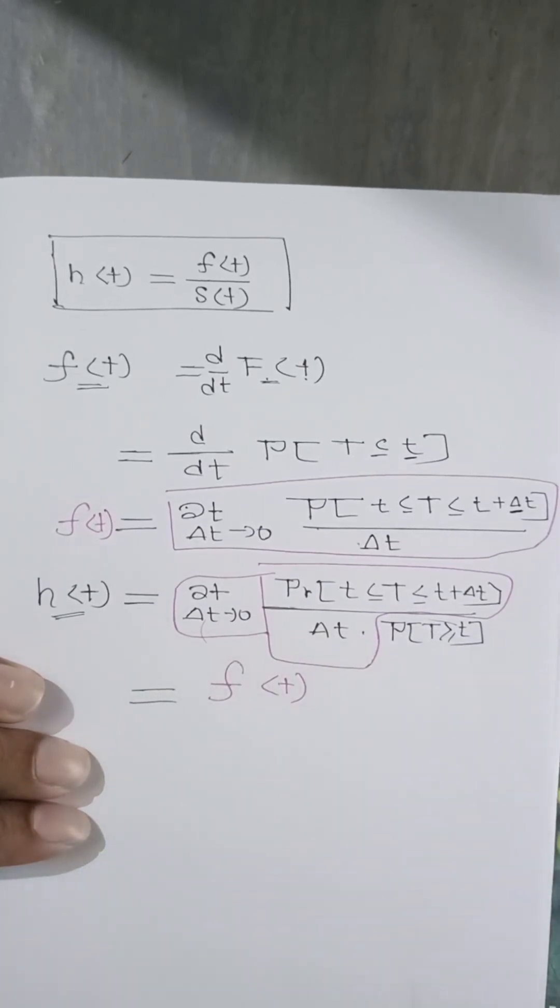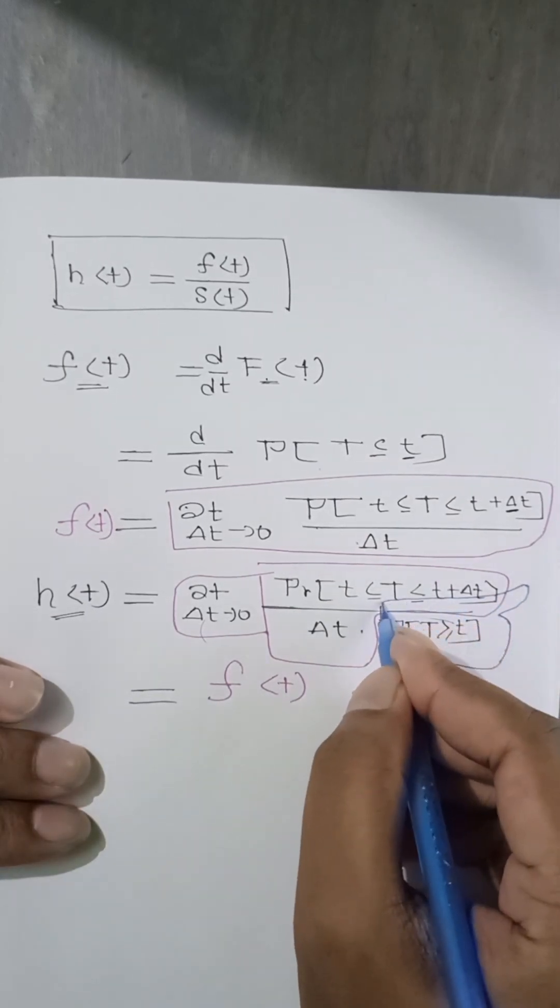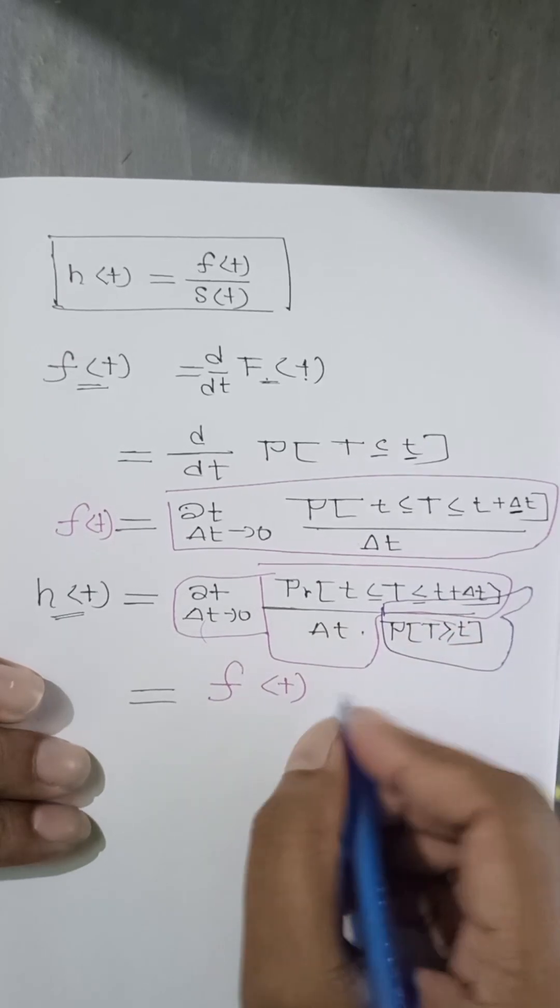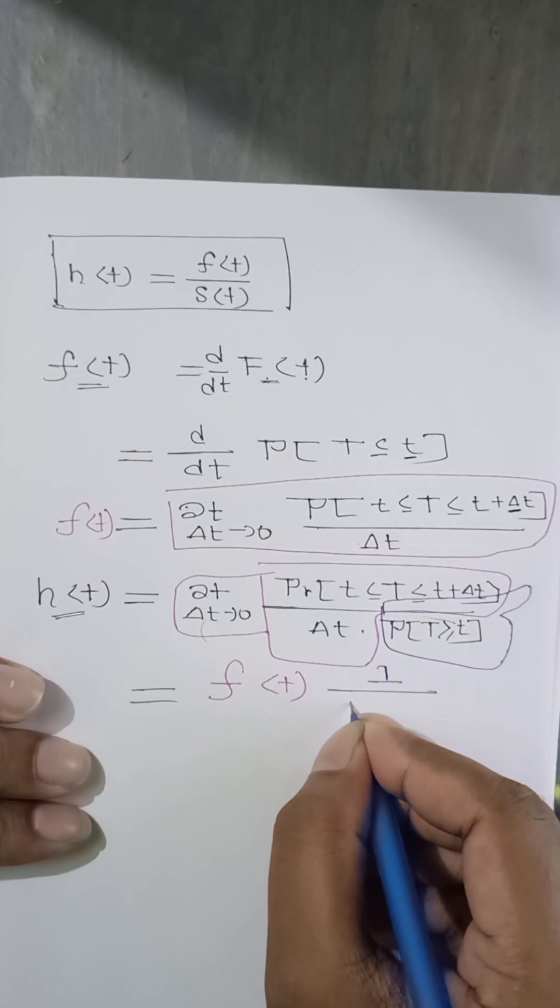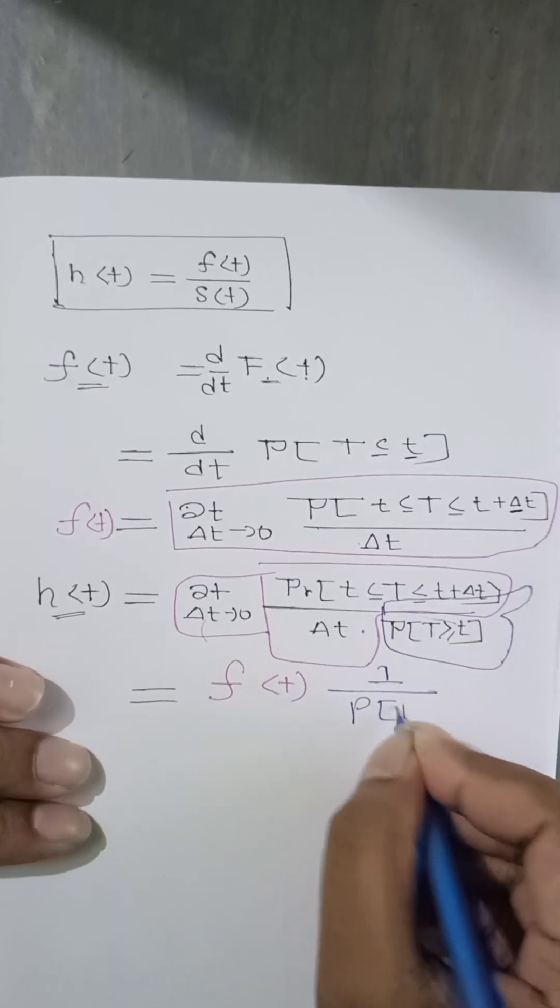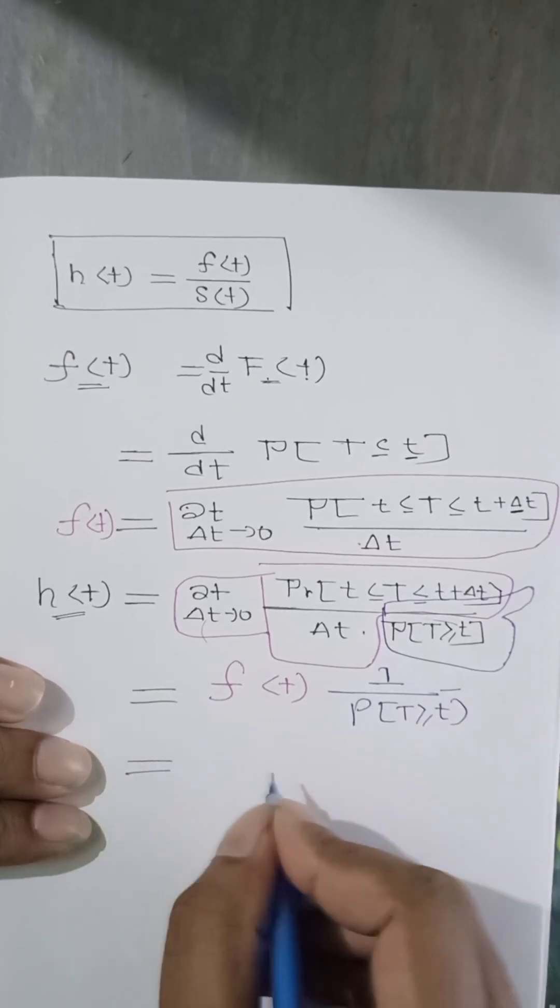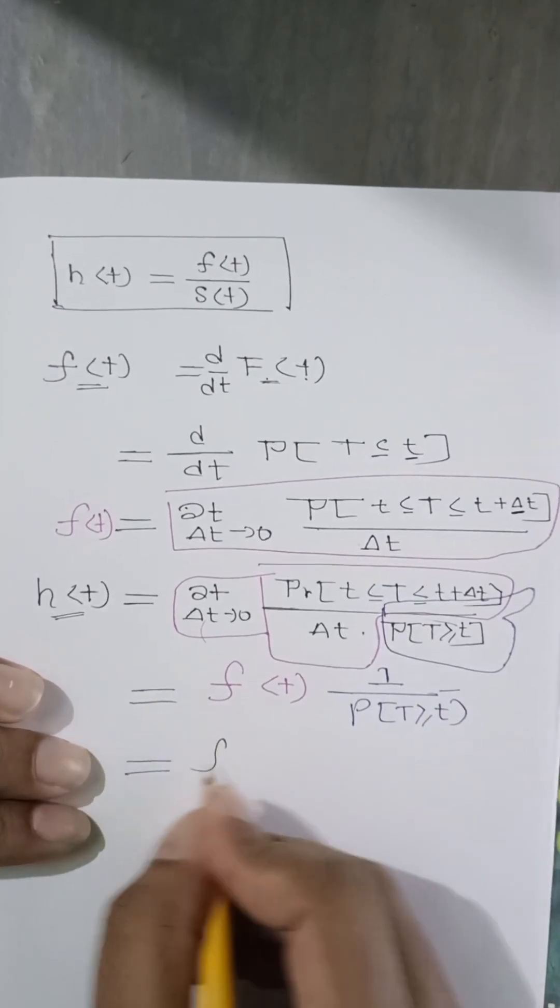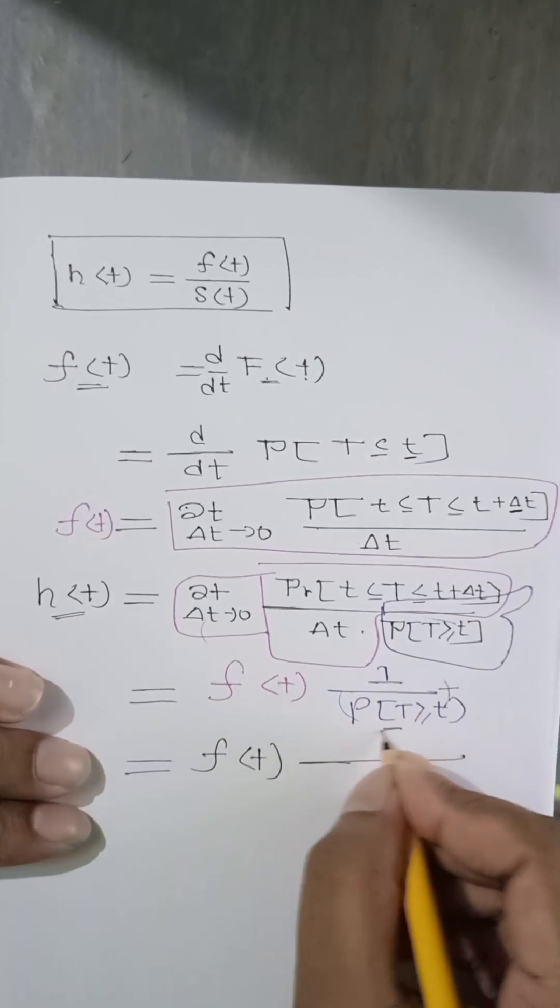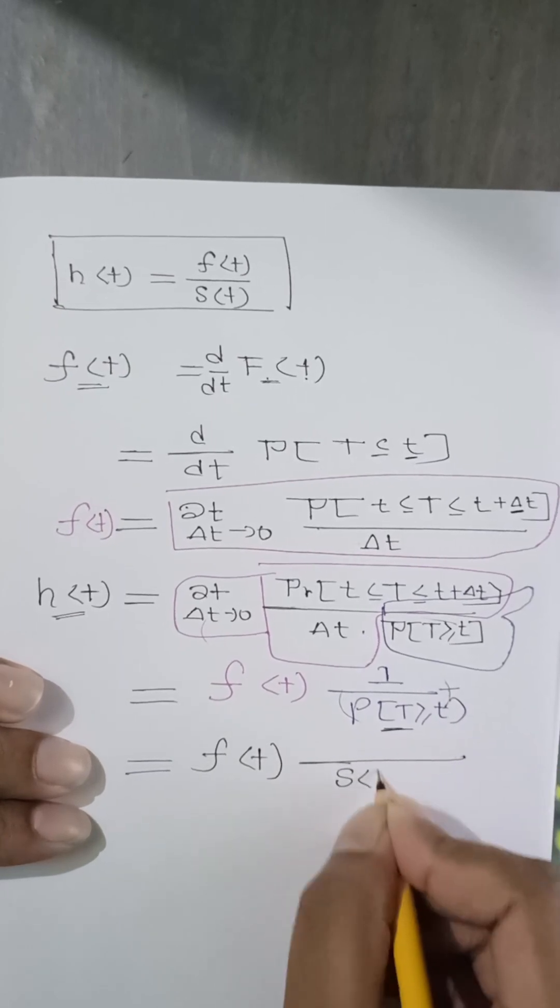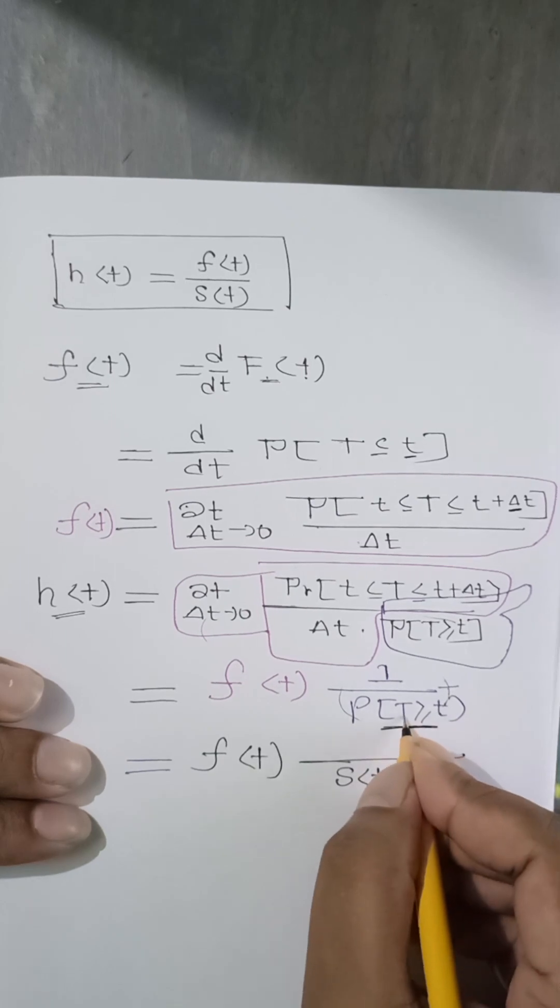And if you notice this with the numerator, it will be like one over this probability of T greater than t. Let me write an extra line to make it more clear. Then you will find f of t, and this one you can write as the survival function. By the definition of the survival function, any time beyond a certain time. So one by S of t.